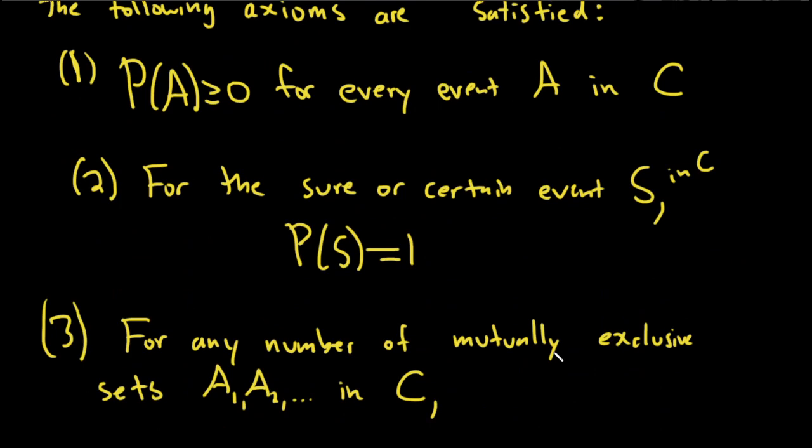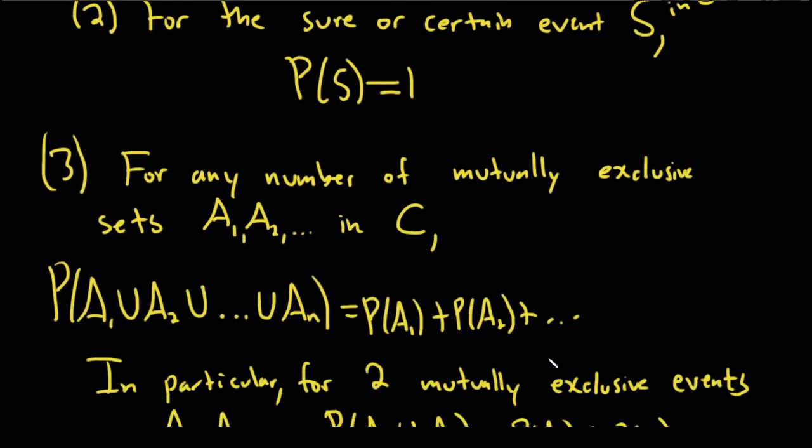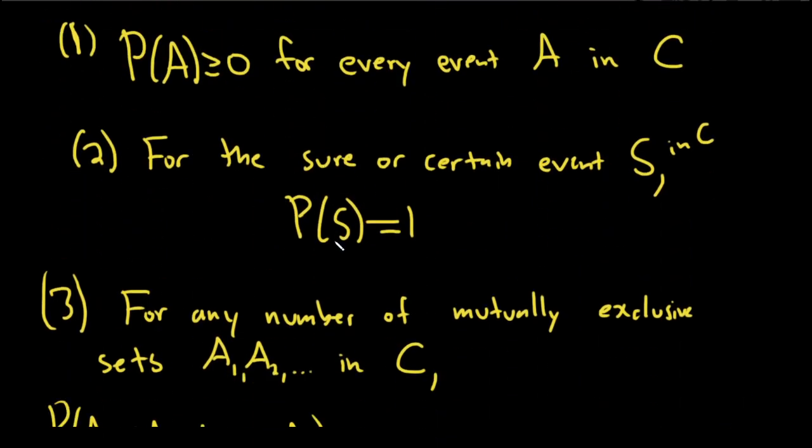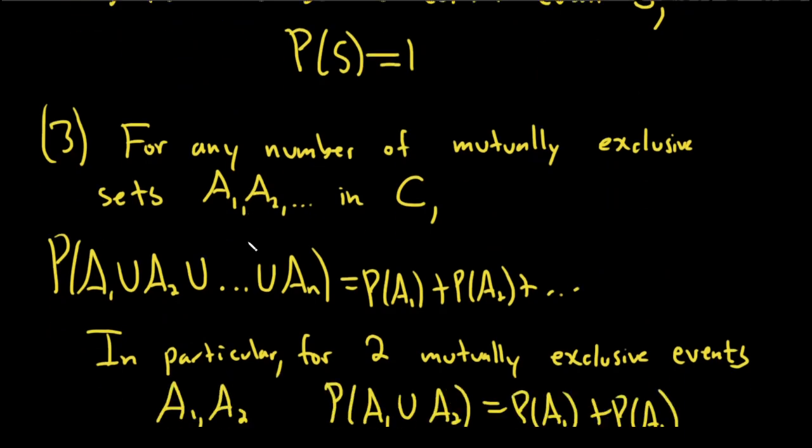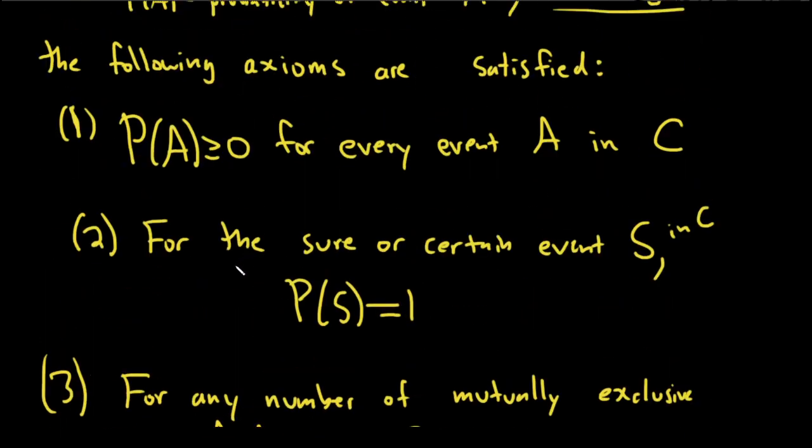So those are the axioms of probability. Just want to introduce them quickly in this video because you do need them sometimes for proofs. So if you're doing introductory proofs with probability, just try to fall back on these and you should be able to figure it out. Good luck.